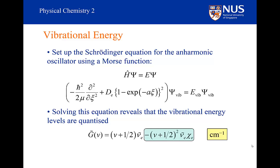And that has to be right, because we know that for small values of v, the result should tend towards the harmonic solution. Whatever model we came up with to describe anharmonicity had to have this property — tending towards the harmonic solution for small values of the quantum number v. The Morse potential does have that property, which is another reason why we chose it.